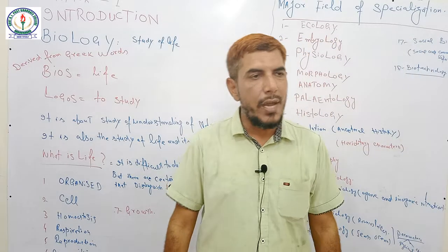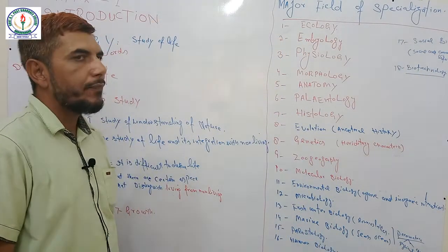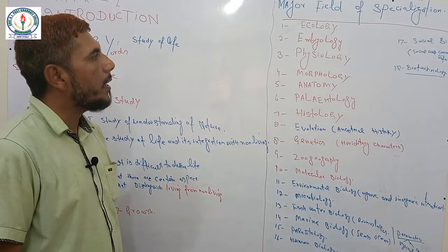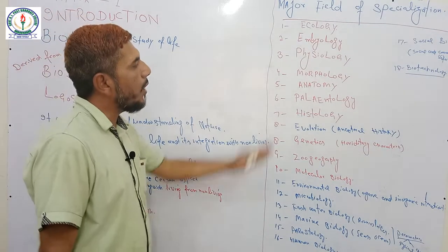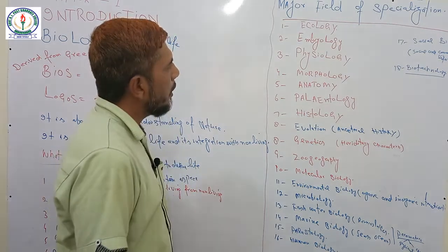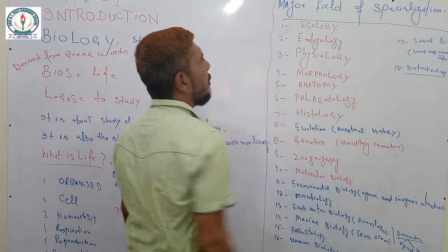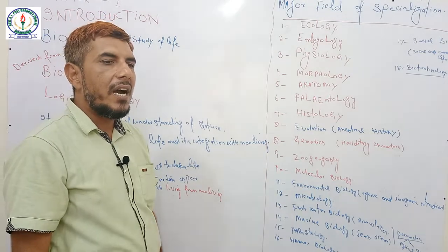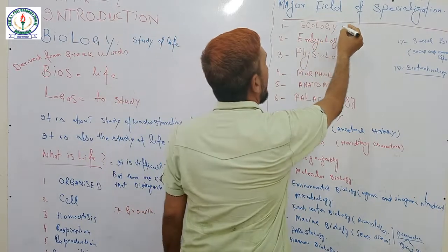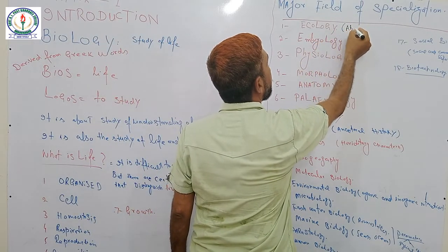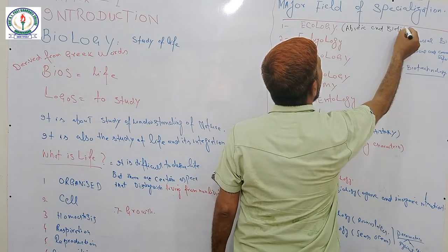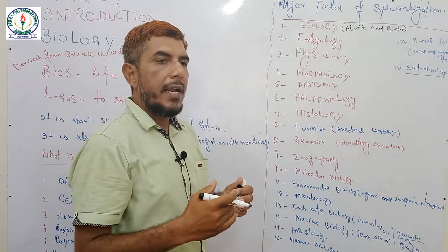Now I would like to explain the major fields of specialization, or major branches of Biology. A few are mentioned on the board. First is Ecology. Ecology is the discipline of biology in which we study the environment and its components, particularly abiotic and biotic factors and their interactions.